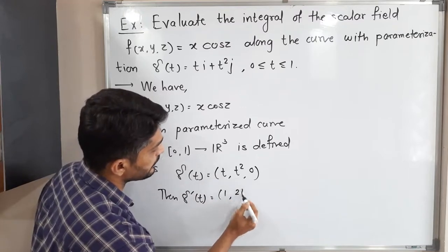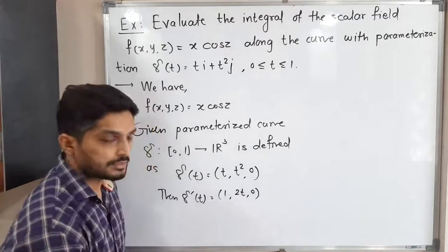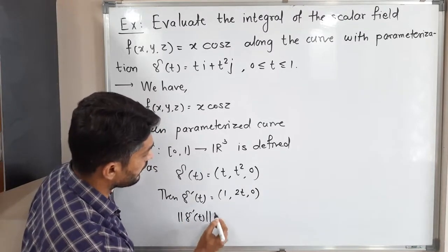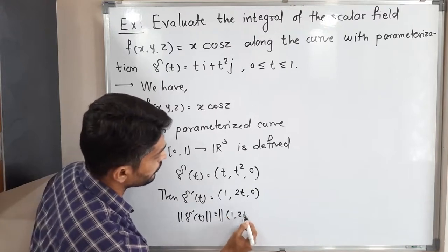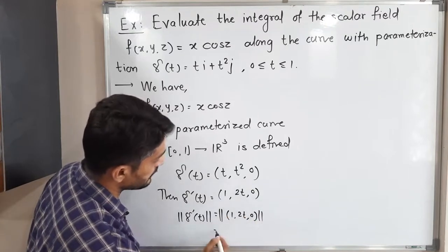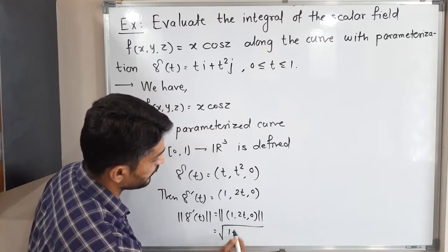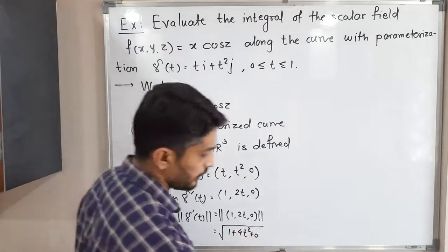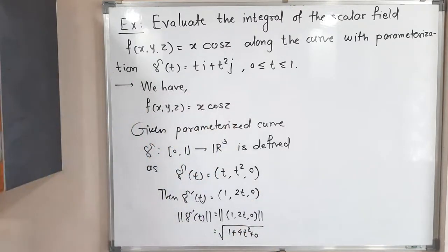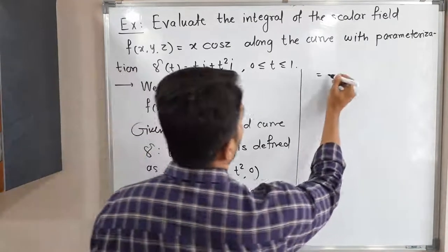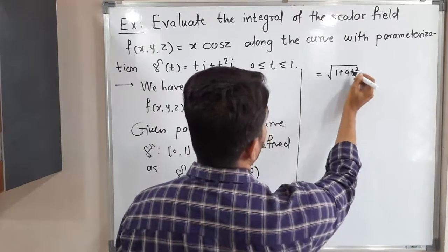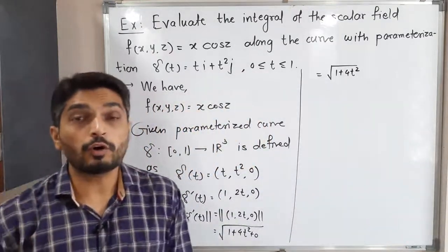So γ'(t) = (1, 2t, 0). The norm ||γ'(t)|| is the square root of the sum of squares of each component: √(1² + (2t)² + 0²) = √(1 + 4t²).